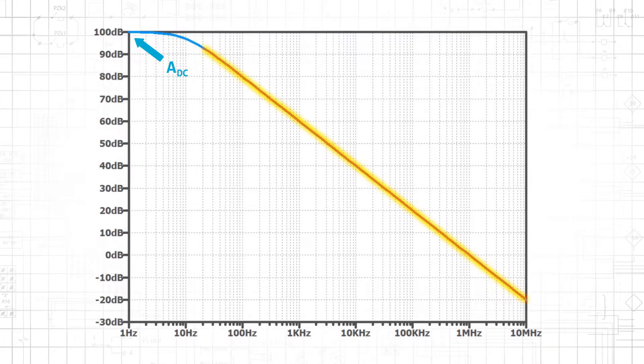Eventually, the slope stabilizes, and the gain decreases by 20 dB for every factor of 10 increase in input frequency.